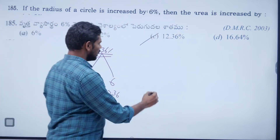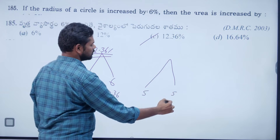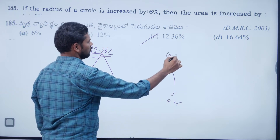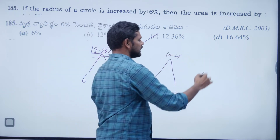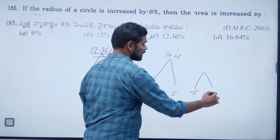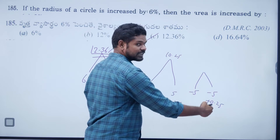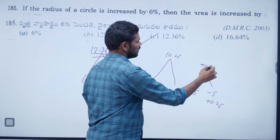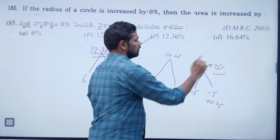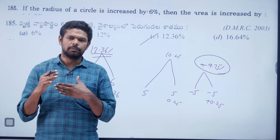For example, 5% increase: 5 + 5 + 0.25 = 10.25%. For 5% decrease: −5 − 5 + 0.25 = −9.75%. All these calculations can be done mentally. Mind calculations save time.